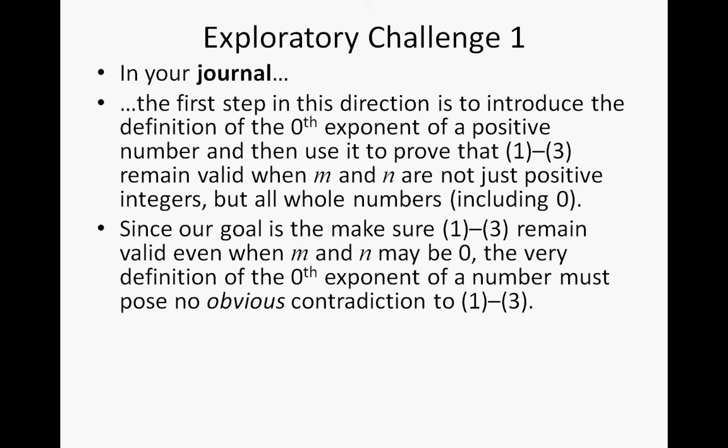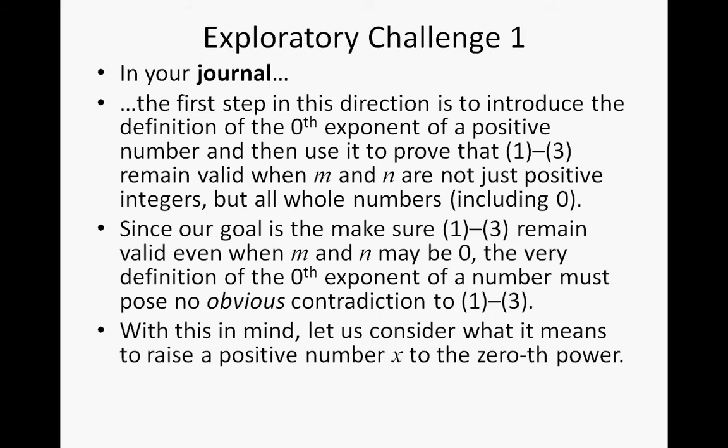Since our goal is to make sure equations 1 through 3 remain valid even when m and n may be 0, the very definition of the 0th exponent of a number must pose no obvious contradictions — meaning we shouldn't be able to contradict those equations even when using the 0 power. So with this in mind, let us consider what it means to raise a positive number x to the 0th power. What should 3 to the 0th power mean? Go ahead and make a guess.